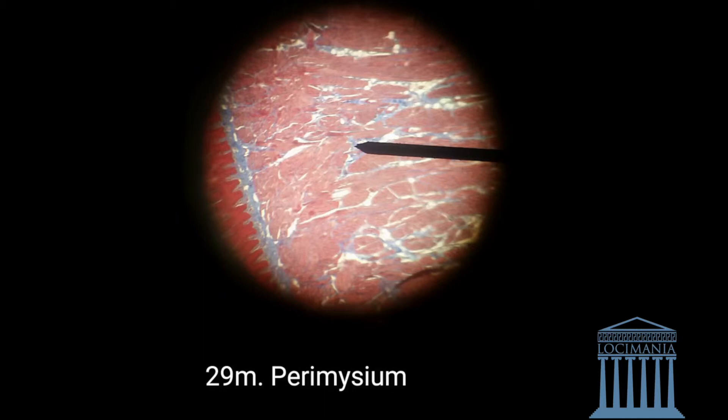If you look really closely, you can see the blue staining — that's the perimysium. It is also connective tissue, but it is surrounding the skeletal muscles.